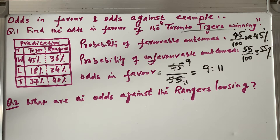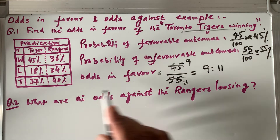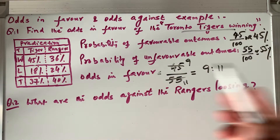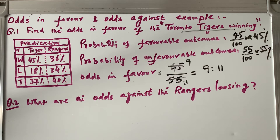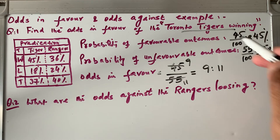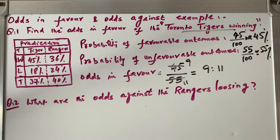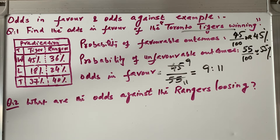So 9 to 11 is the odds in favor. If the question asked for odds against, you would say the opposite: 55 over 45 — or 11 to 9 — for the Toronto Tigers to win.